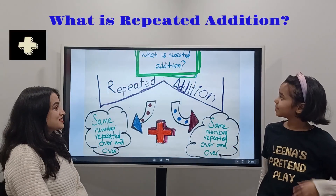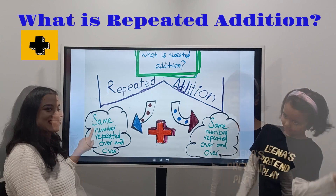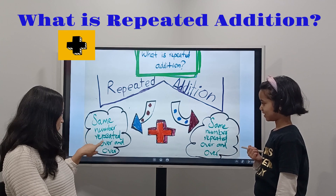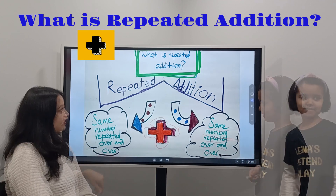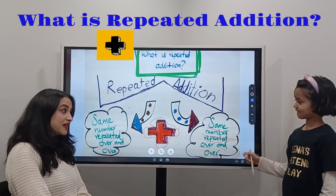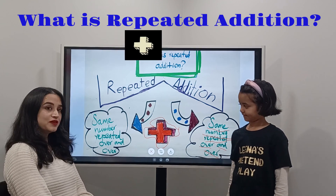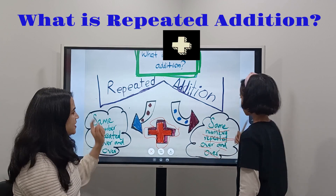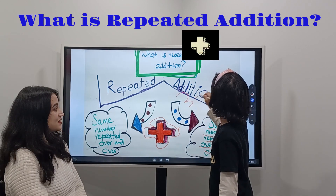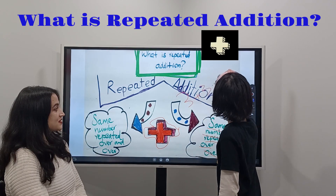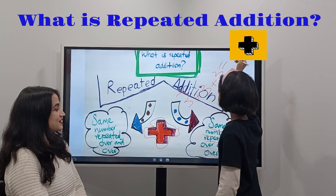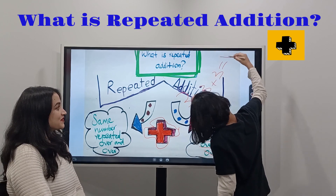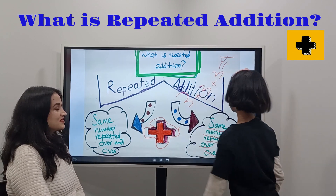What is repeated addition? So I'll read this slide: same number repeated over and over. So repeated addition means the same number repeated over and over. Can you show how to do that? What example? Three plus three plus three equals nine.